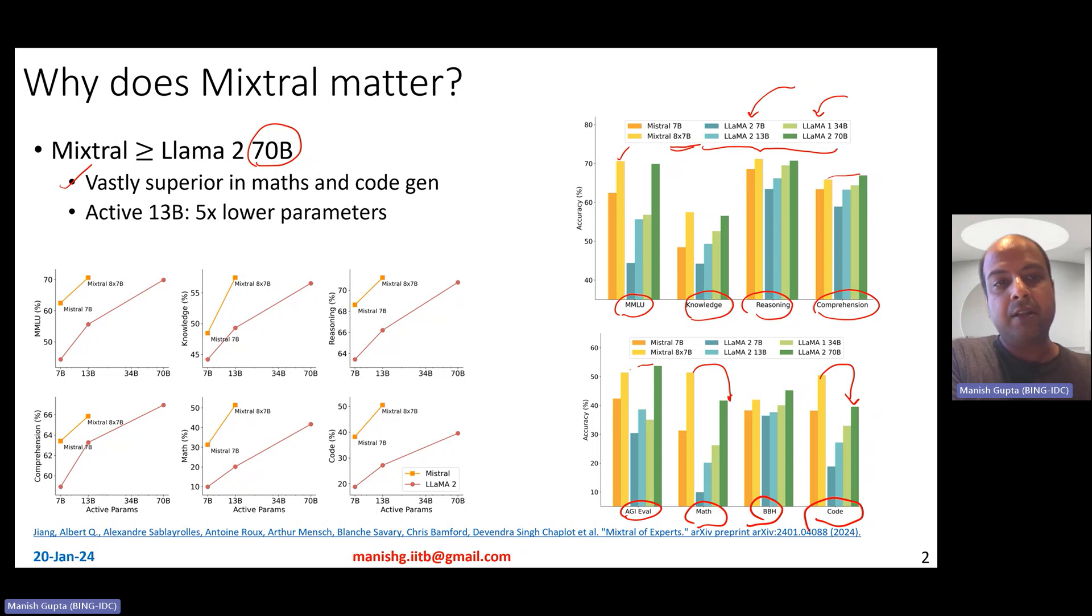Now Mixtral model essentially has 5x lower number of parameters compared to Llama 2. In fact, it has only active 13 billion parameters. So it is 5x smaller and much better across several benchmarks, mostly superior in maths and code generation.